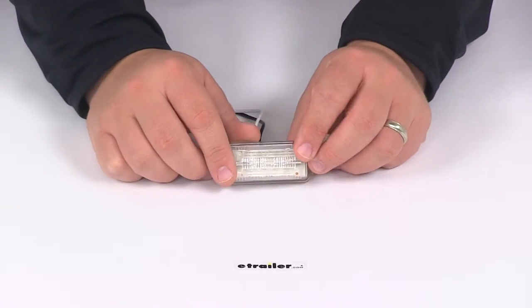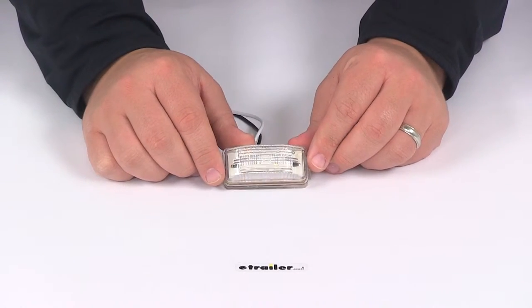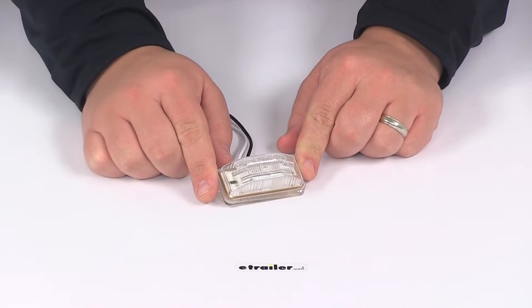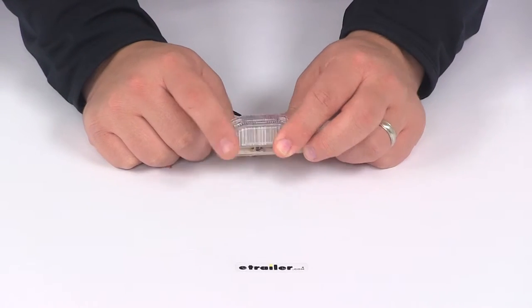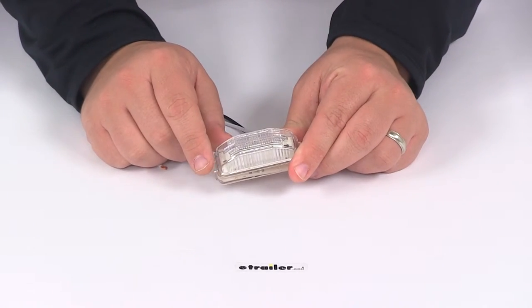Now this is designed to mount using a mounting grommet or mounting bracket. Those items are sold separately but if you're in need of one you can find them here at eTrailer.com. The light has tabs on each side that way it just snaps into the bracket or grommet.